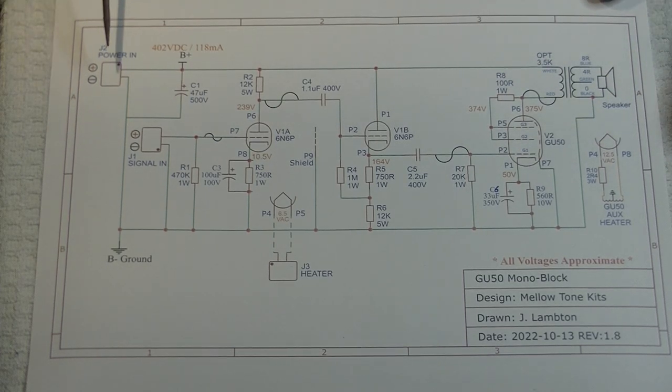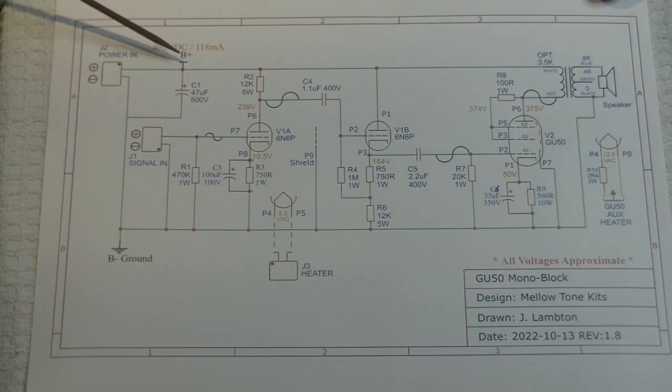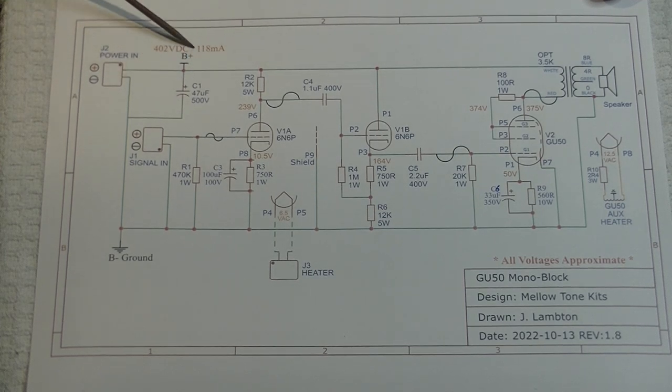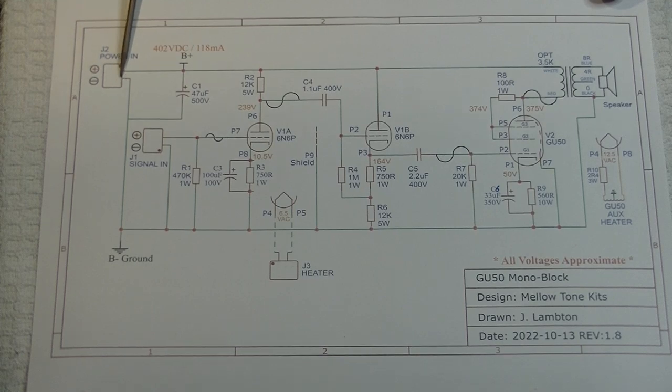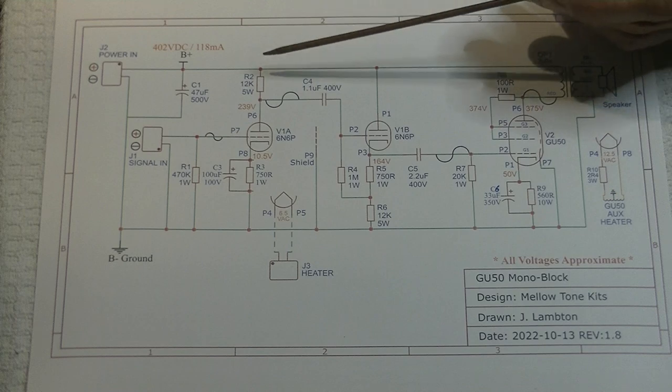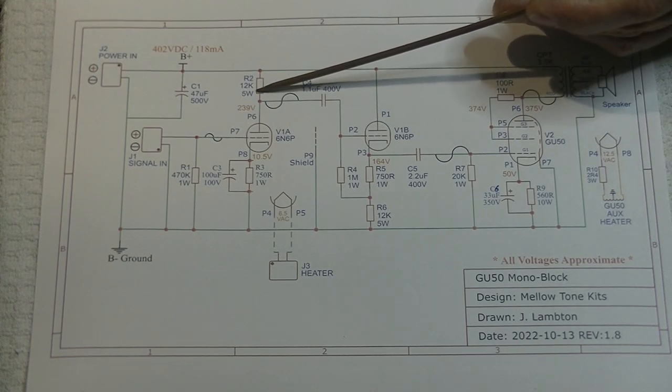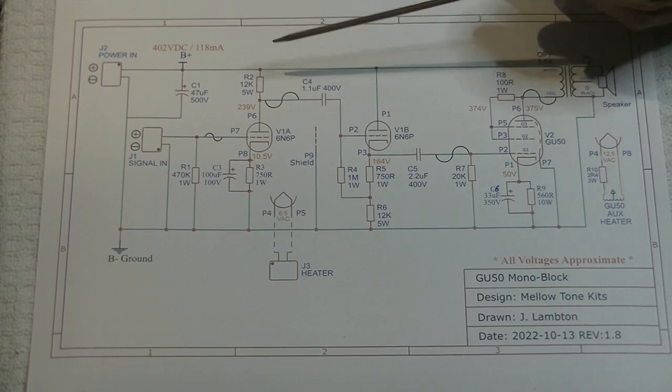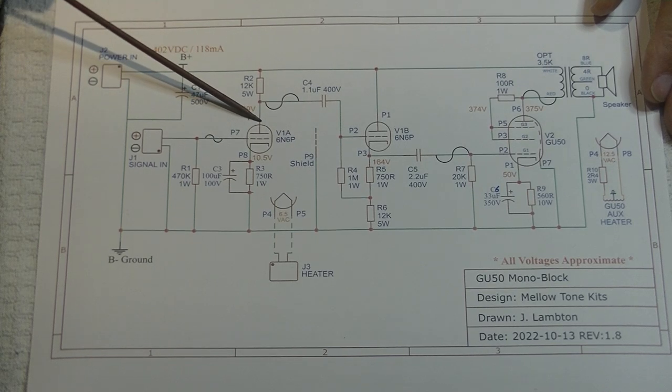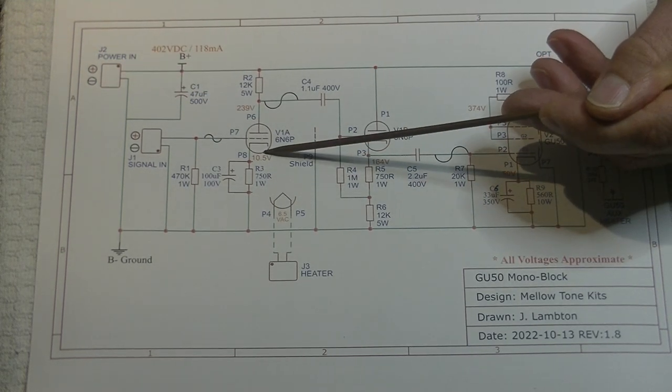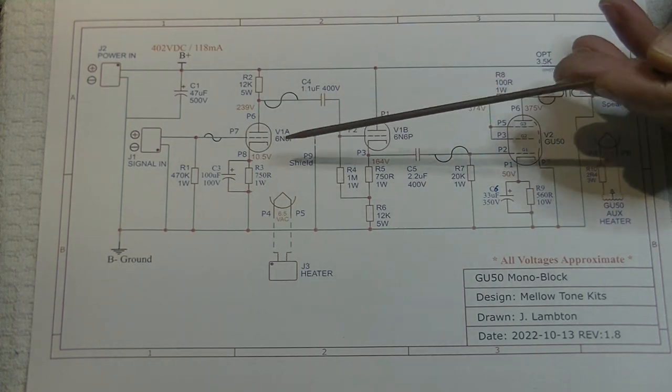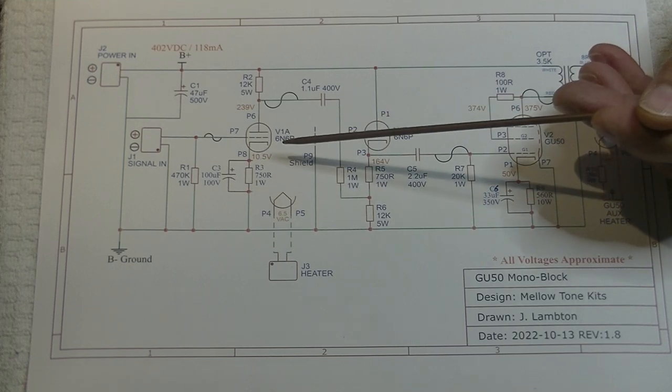Now, C1 is a little electrolytic capacitor, 47 microfarad, so you can see it's positive up here, and that is just the final filtering stage to make sure that our B-plus rail here is nice and clean. We've got a plate resistor R2 of 12k, 5 watts, which is a fairly big value, but we've got a lot of voltage dropping. 239 volts is how much we want on the plate. Our operating point is 10.5 volts. How do we set the operating point of the tube? How does it work? Well, let's go through that really quickly.